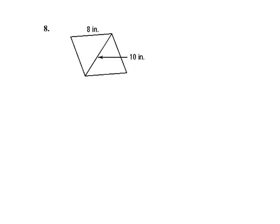For number eight I have a rhombus and only one diagonal is given, so I need to find the other one. Because it's a rhombus, the diagonals meet at a 90-degree angle. I know this segment is 5 and the side of the rhombus (the hypotenuse) is 8. I can use the Pythagorean theorem to find x.